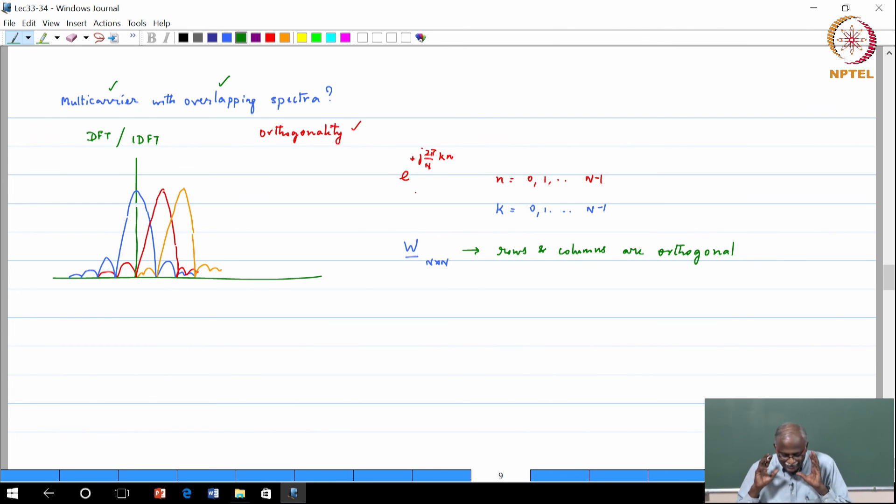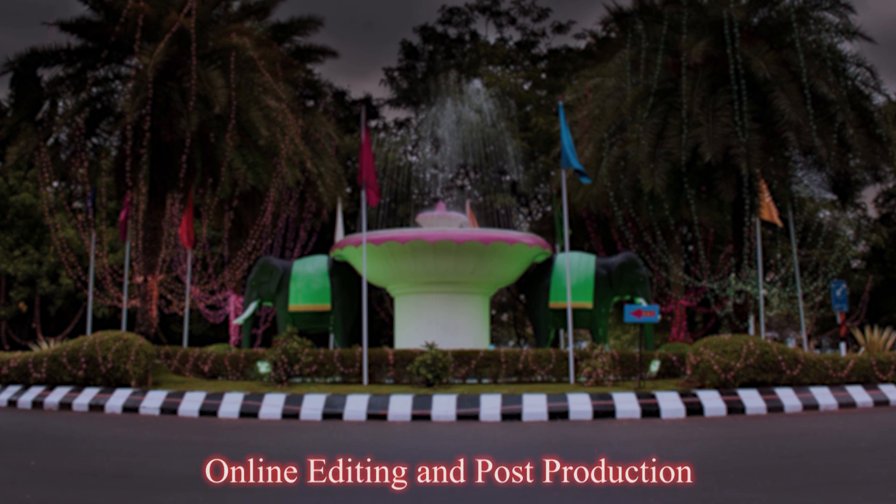We never think of the IDFT as a multi-carrier system but in a sense it is a multi-carrier system with overlapping carriers which maintains orthogonality. This is our starting point to link the various pieces together. IDFT and DFT are going to play a very important role, which is why OFDM comes about. It is a well known, well proven multi-carrier system available to us that we are familiar with.